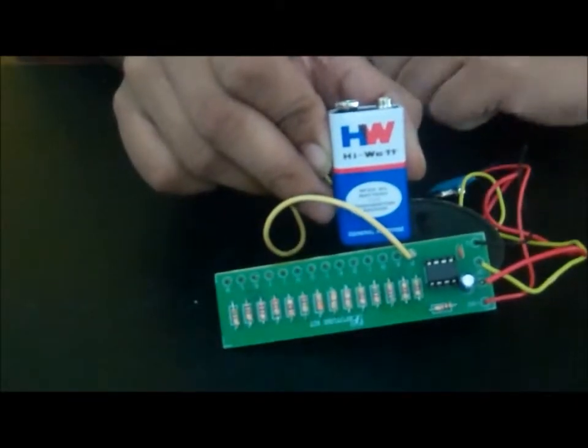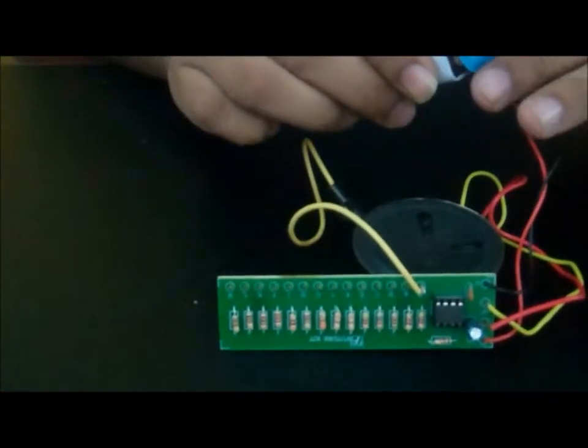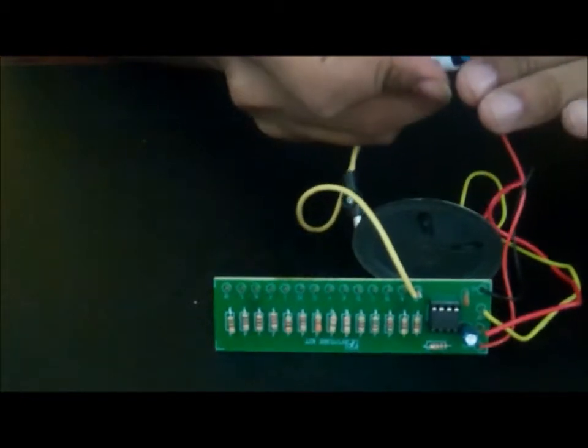This kit has an operating voltage range of 9 volts DC. Apply power supply by connecting the battery to the provided battery socket.